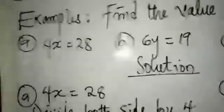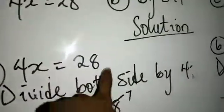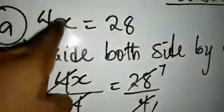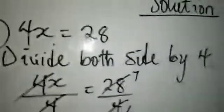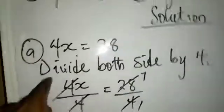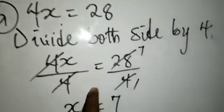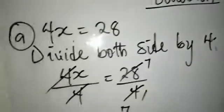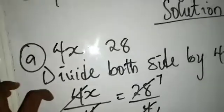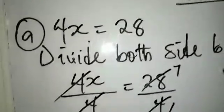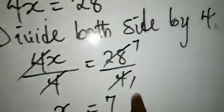Now, we have 4x is equal to 28. What are we going to do to the times between them? We are going to divide. We say divide both sides by 4. 4x divided by 4 is equal to 28 divided by 4. We eliminate 4 here, and 28 divided by 4 will give me 7.